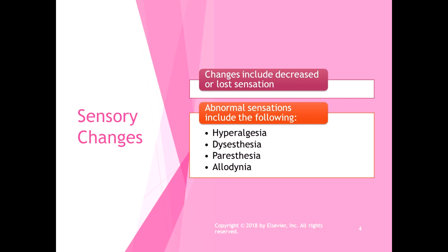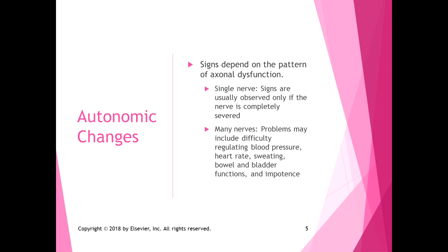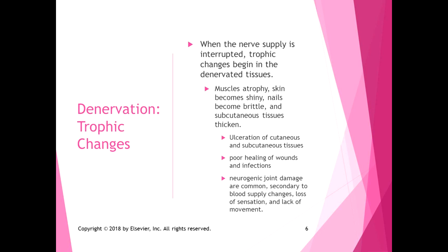Sensory changes include decreased or lost sensations: hyperalgesia, dysesthesia, paresthesia, or allodynia, where a normally non-painful stimulus is painful. Autonomic changes depend on the pattern and are usually only observed if the nerve is completely severed. Problems may include regulating blood pressure, heart rate, sweating, bowel and bladder functions, and impotence, depending on where the dysfunction is.